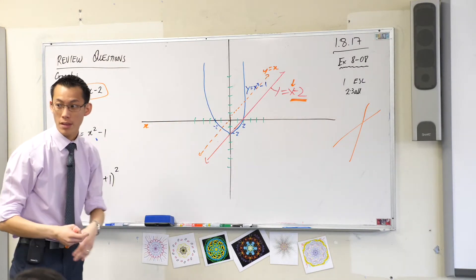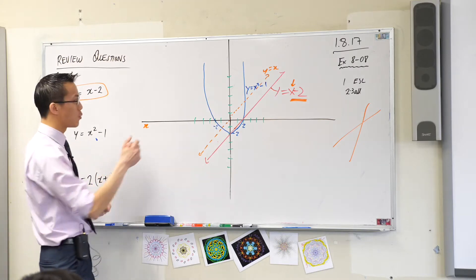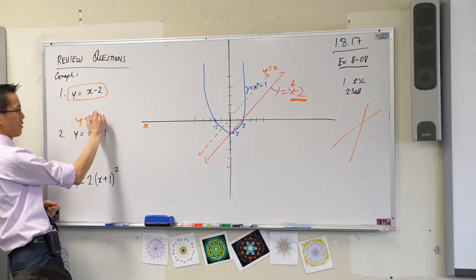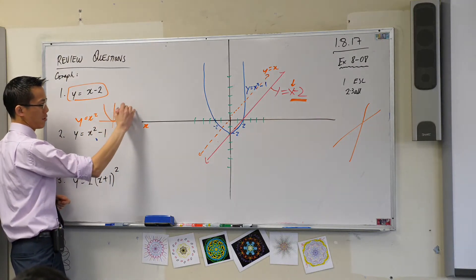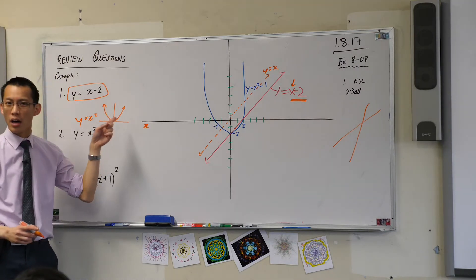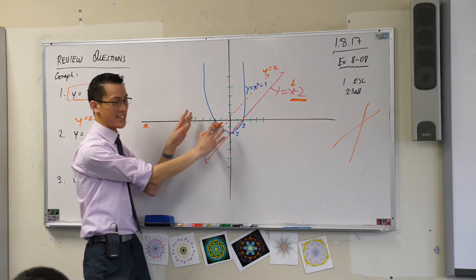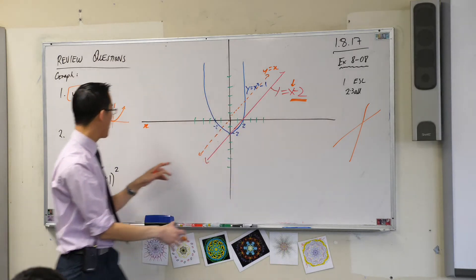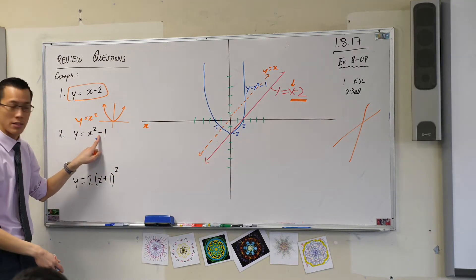Yeah, it's gone down. We know what the regular y equals x squared looks like. Maybe you want to draw this just on the side here. We've drawn this heaps of times. This has been turned into this by moving it down. And that's correct. We are supposed to move down.